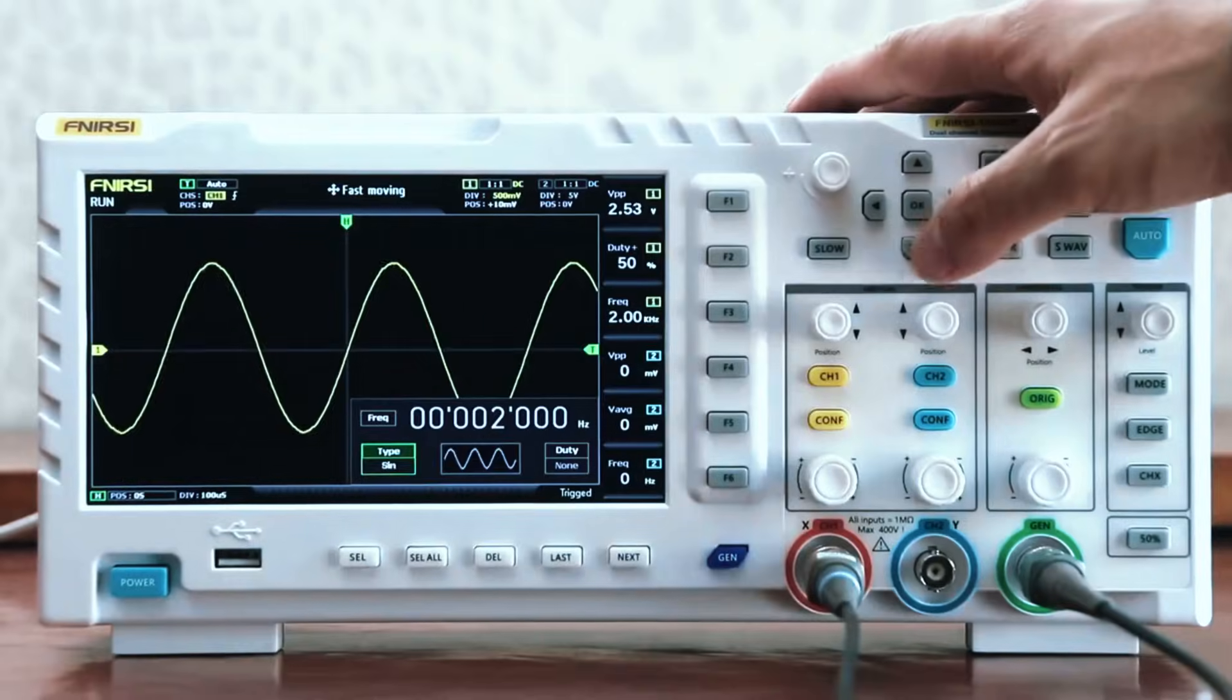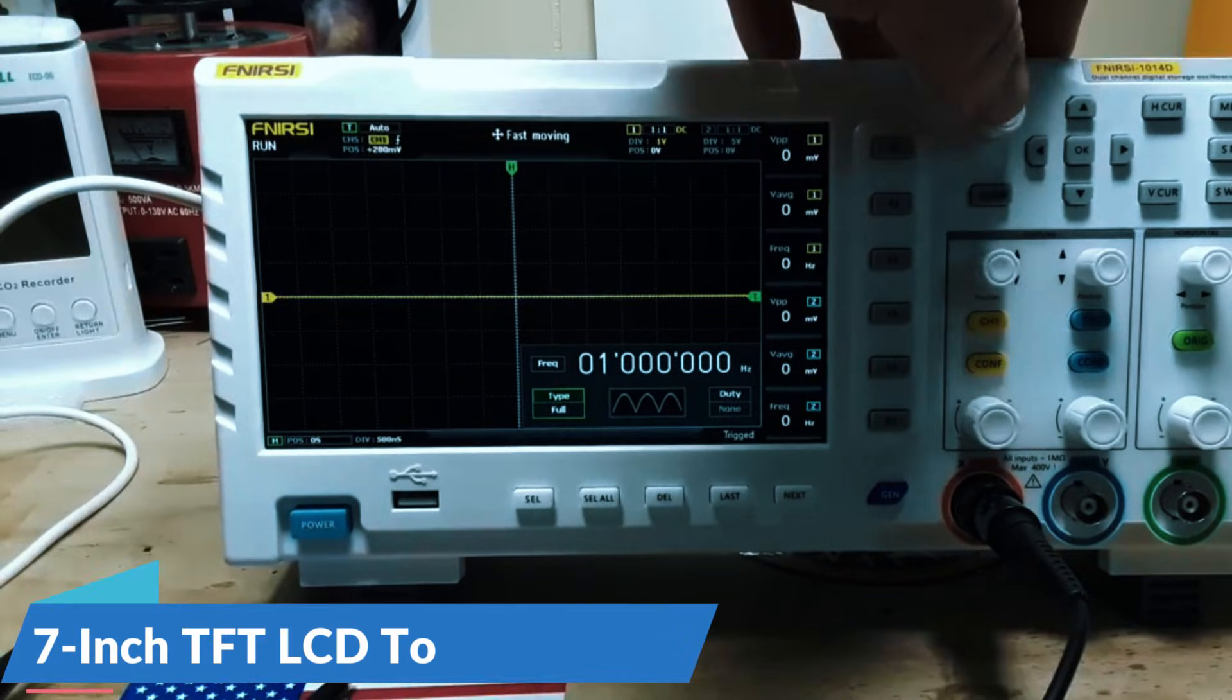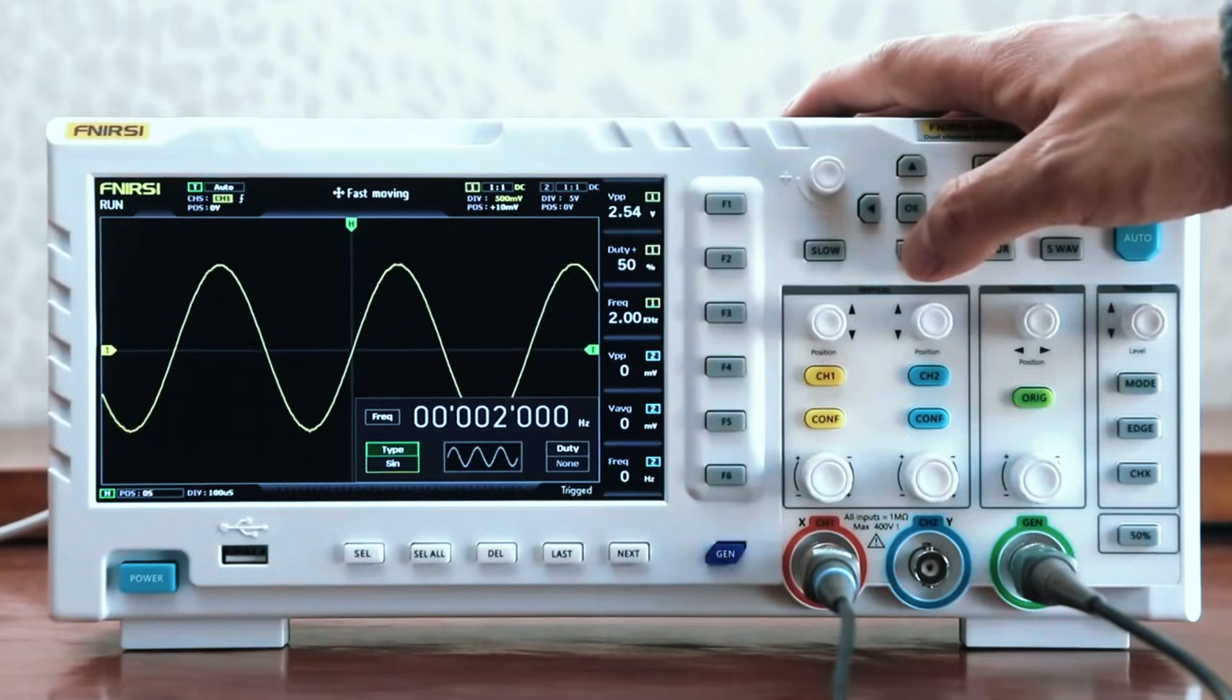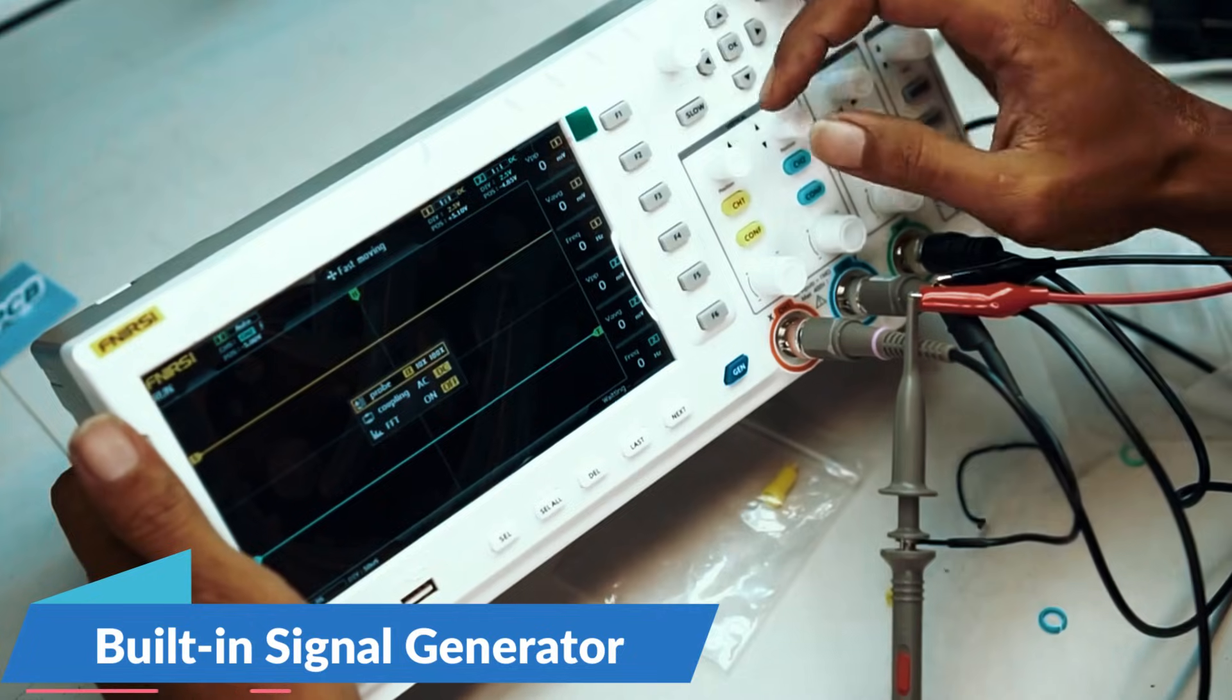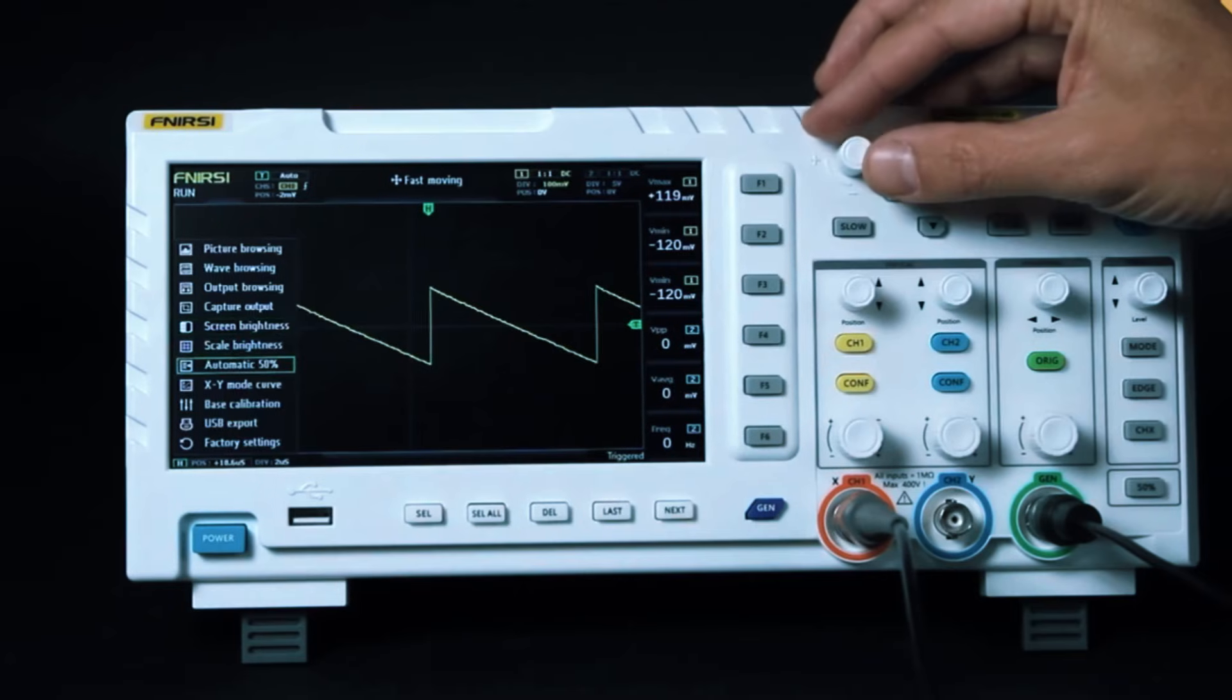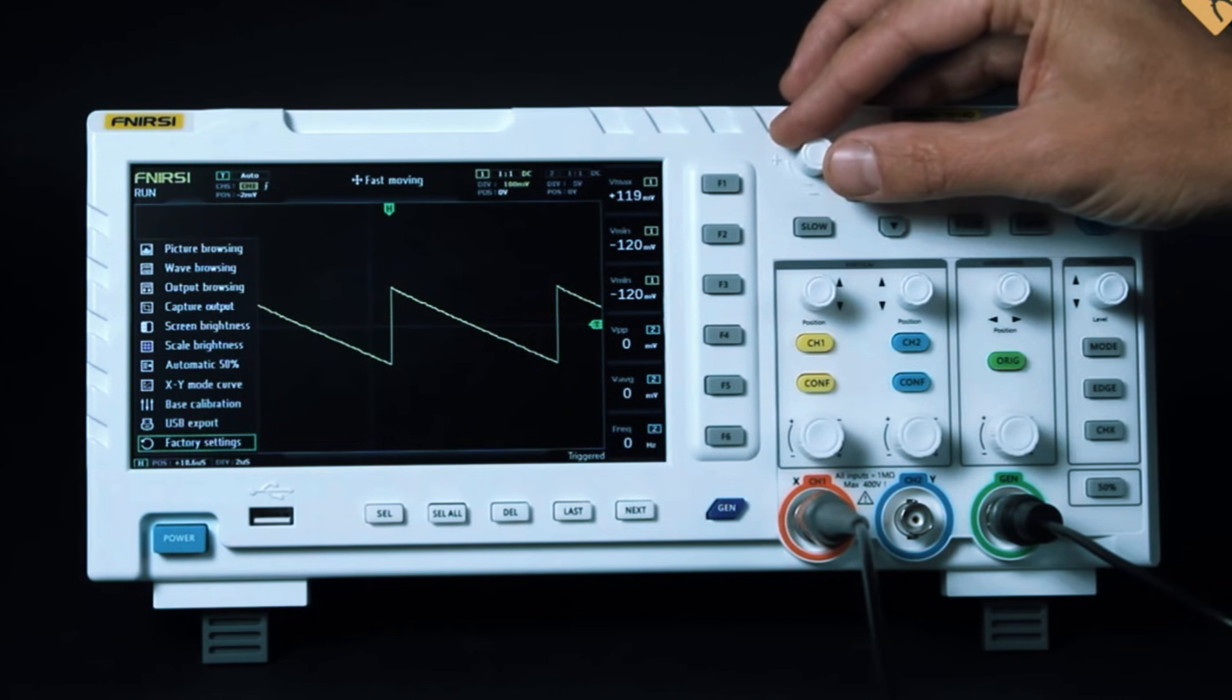Unlike older budget models with clunky interfaces, the FNI-RSI-1014D comes with a 7-inch TFT LCD touch display, making navigation smooth and user-friendly. One of its biggest highlights is the built-in signal generator, a feature rarely found at this price point. This allows users to generate waveforms for testing circuits, a huge advantage for students and beginners learning circuit troubleshooting.